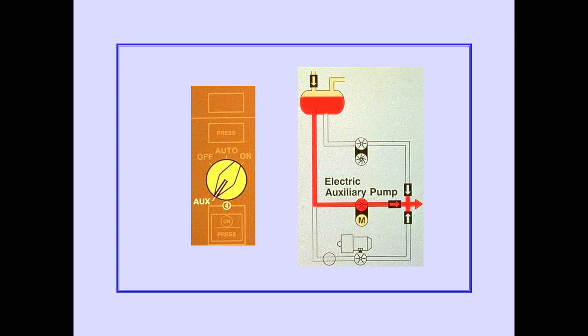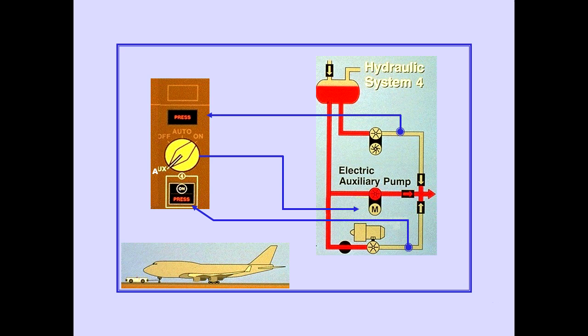The demand pump selector for System 4 has an additional position labeled AUX. The auxiliary pump is used only for ground operations. With the selector in AUX, the electric auxiliary pump operates when the engine pump output pressure is low. The number four demand pump will not operate and the demand pump low-pressure light illuminates.